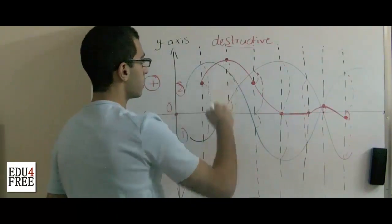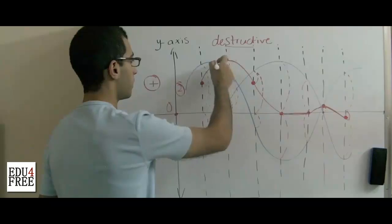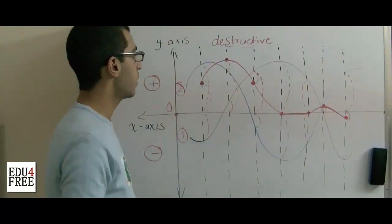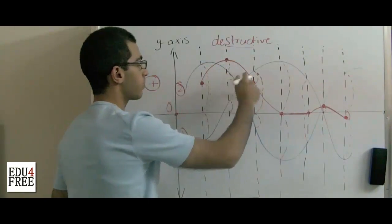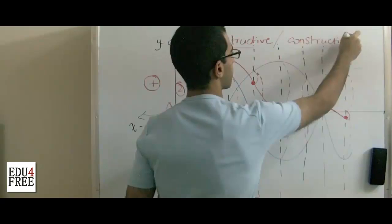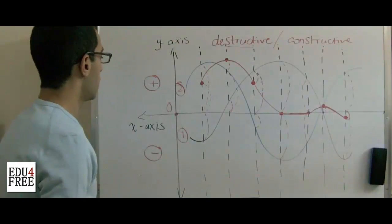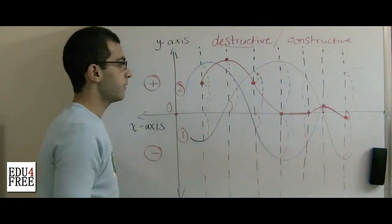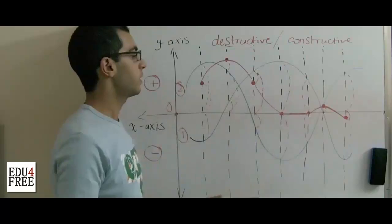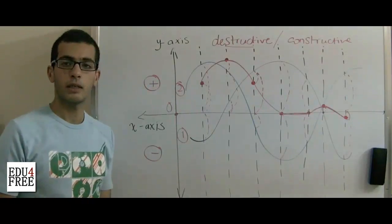At the second point, we added both waves together so that the resultant point is higher than both waves, giving more strength to the wave at that point. This kind of interference is called constructive interference. So this is the superposition of waves — the meaning of destructive and constructive interference, how we draw the resultant wave. Thank you for watching and see you next time.